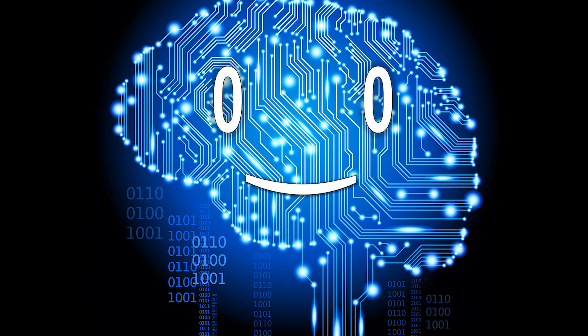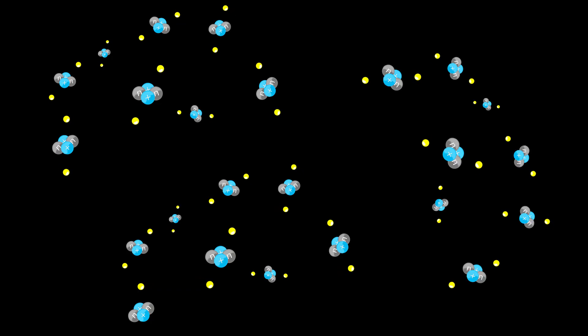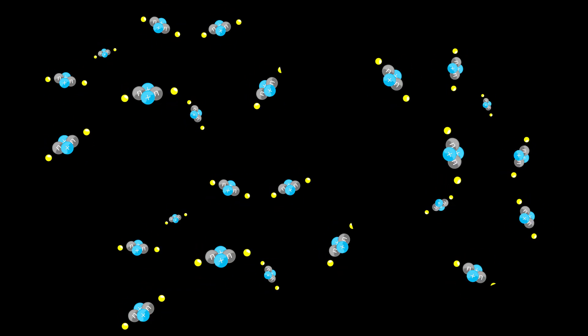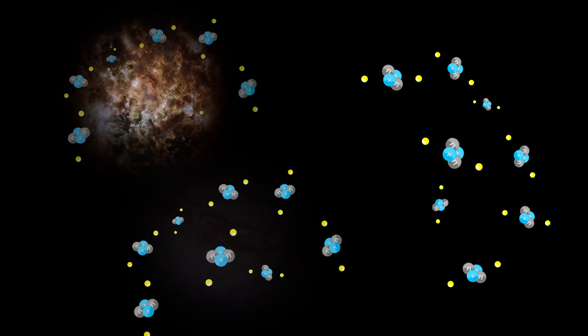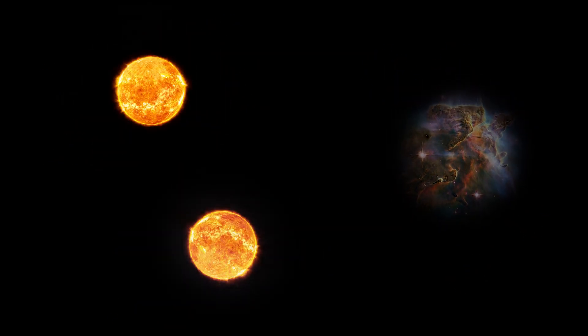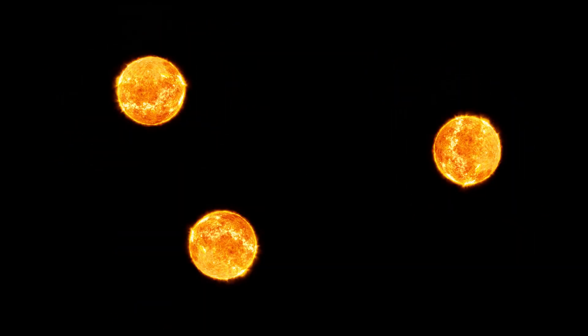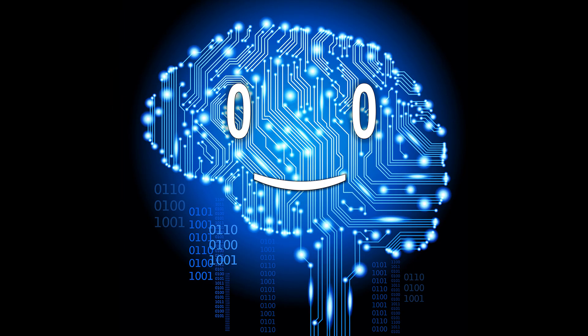100 million years after recombination, under the influence of gravity, the clouds of matter started to collapse into the first generation of stars. What followed was the structuring of the universe that we see today.